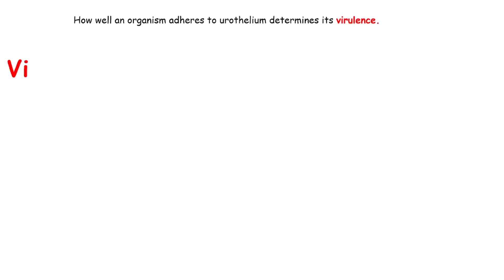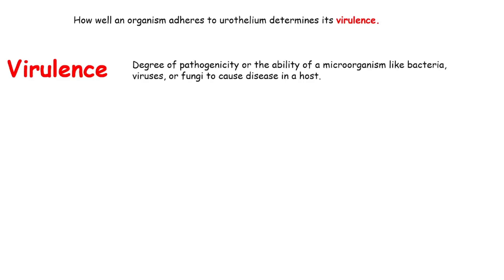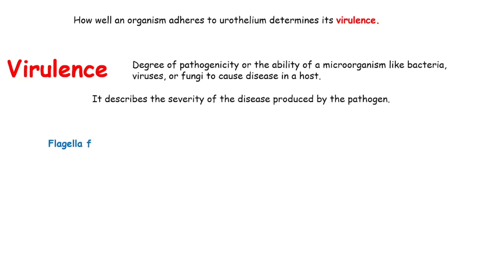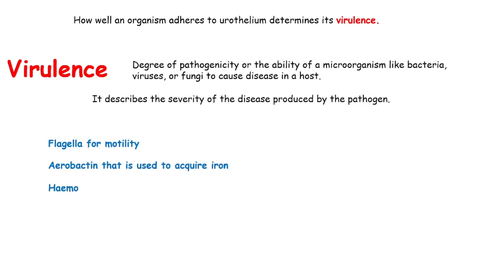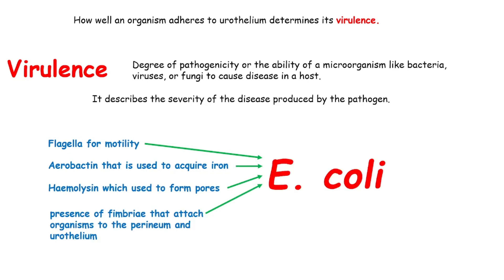How well an organism adheres to urothelium determines its virulence. Virulence refers to the degree of pathogenicity, or the ability of a microorganism such as bacteria, viruses, or fungi to cause disease in a host, and describes the severity of disease produced by the pathogen. The presence of flagella for motility, aerobactin used to acquire iron, hemolysin which forms pores, and above all the presence of fimbriae that attach organisms to the perineum and urothelium on the bacterial cell surface make E. coli such a common pathogen with high virulence.